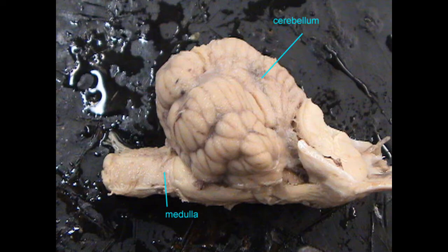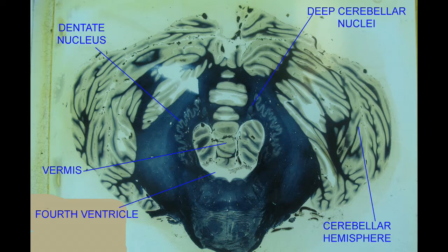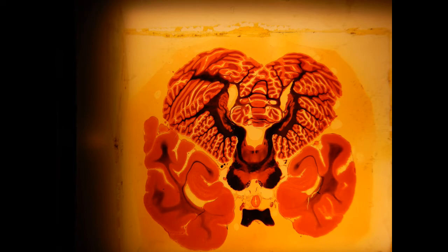The cerebellum is the second largest part of the brain, and obviously it needs to be connected to the other regions of the brain. Note, in these stills, axons have stained black. Note that there are black tracts of axons connecting the cerebellum to other regions of the brain.